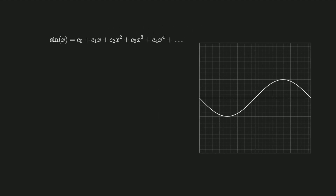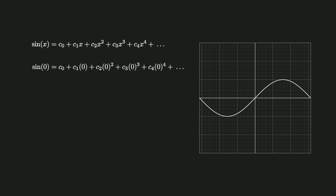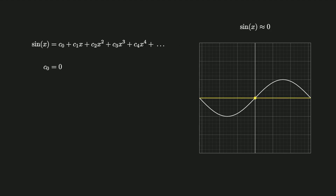Start by representing sine as a polynomial. Since we are expanding the approximation around the point x equals 0, substitute 0 into the equation for x. Sine of 0 is 0, these terms cancel, and rearranging the equation we get c0 is equal to 0. This approximation of sine isn't very good, but it at least makes it so that the approximation returns the correct output at 0.